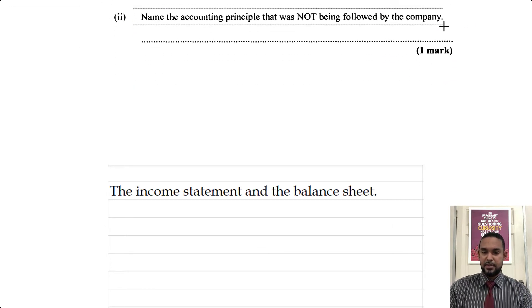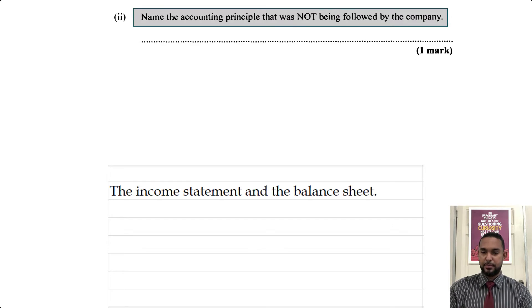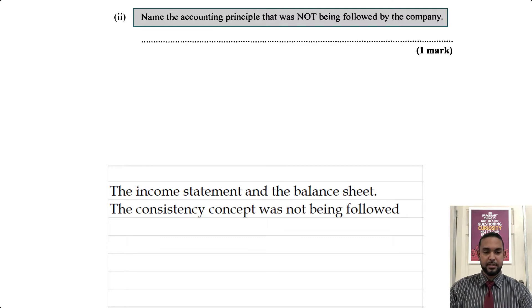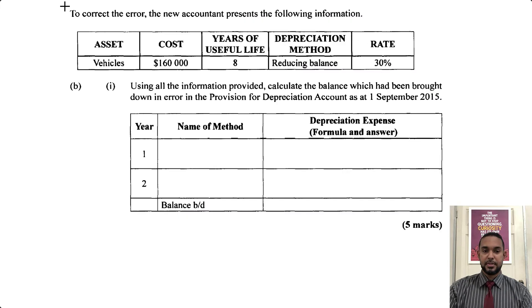Next, name the accounting principle that was not being followed by the company. That's easy — that's the consistency principle. The consistency concept was not being followed. Okay, let's go along and take a look at the next part of the question.